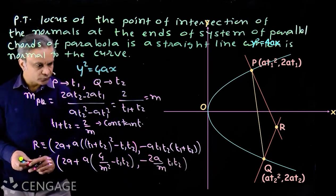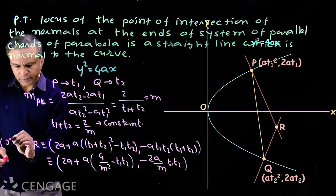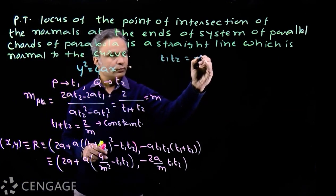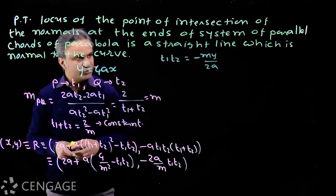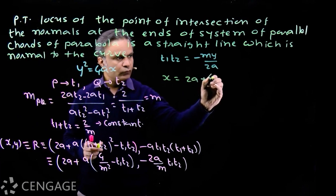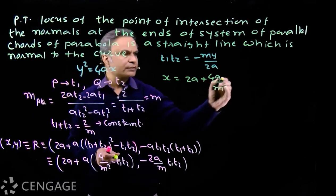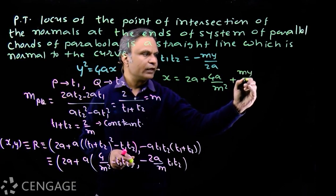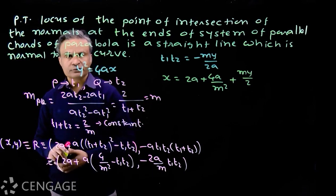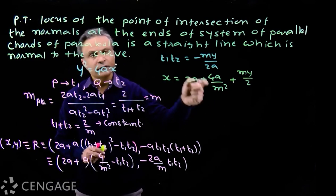To get the equation of the locus of point R, we must eliminate t1t2. Suppose coordinates of point R are (x, y). Comparing y coordinates, we get t1t2 = −my/(2a). Substituting this value of t1t2 into the x coordinate, we get x = 2a + 4a/m² + my/2. This is the locus of variable point R. Clearly this is the equation of a straight line, so the first part is proved — the locus is a straight line.